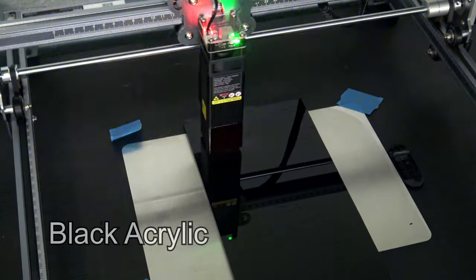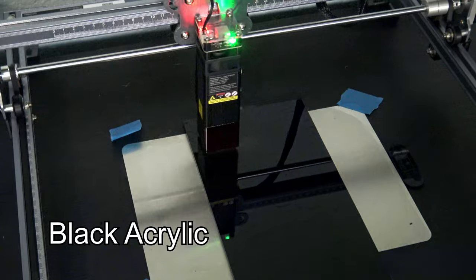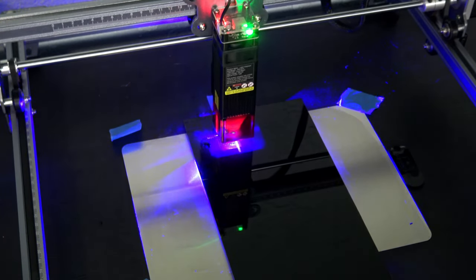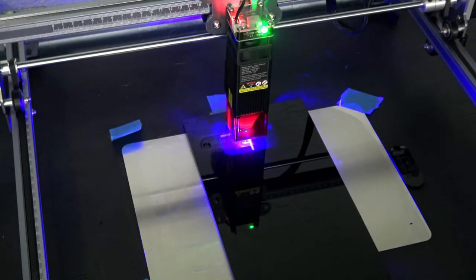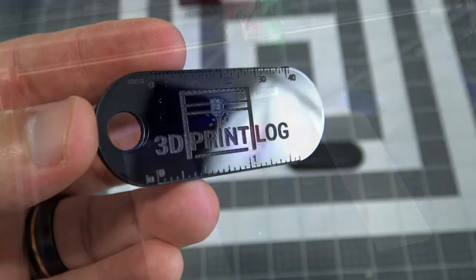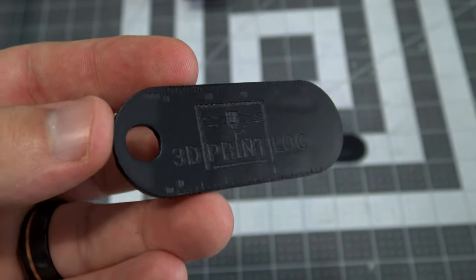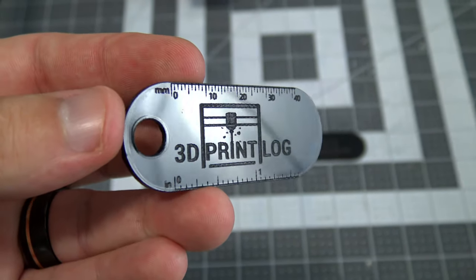Moving on to acrylics. Since diode lasers use visible light, it cannot cut optically clear materials like clear acrylic. However, opaque acrylics like this black acrylic sheet work great. It cut this one-eighth inch acrylic in two passes at 120 millimeters a minute, and the engravings are crisp.